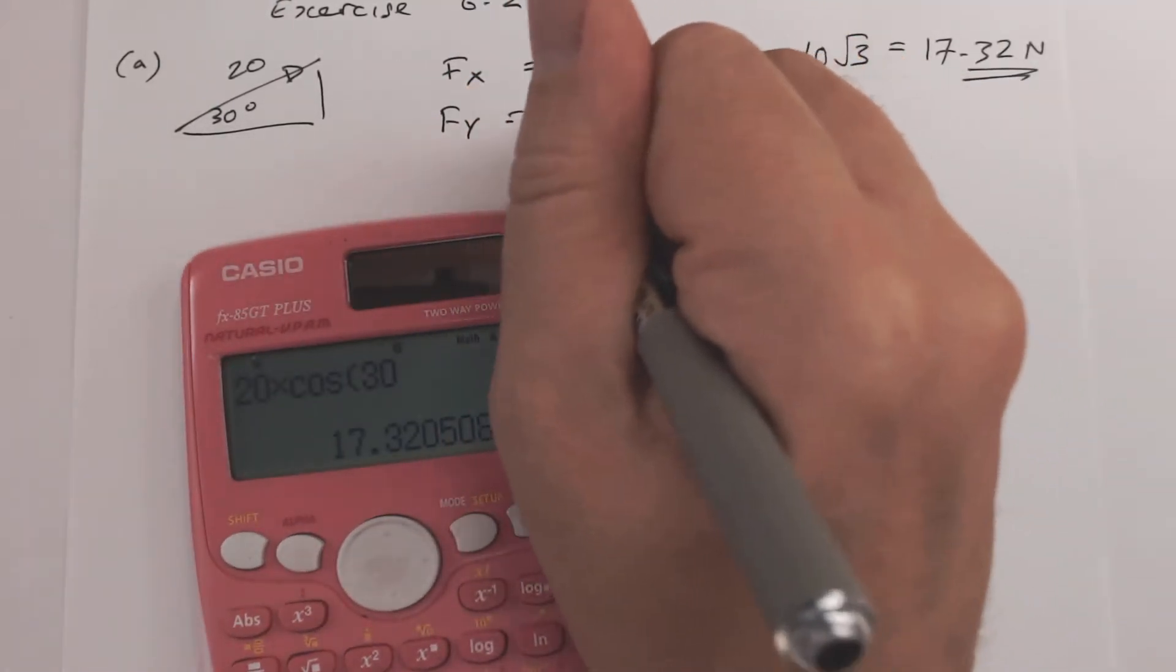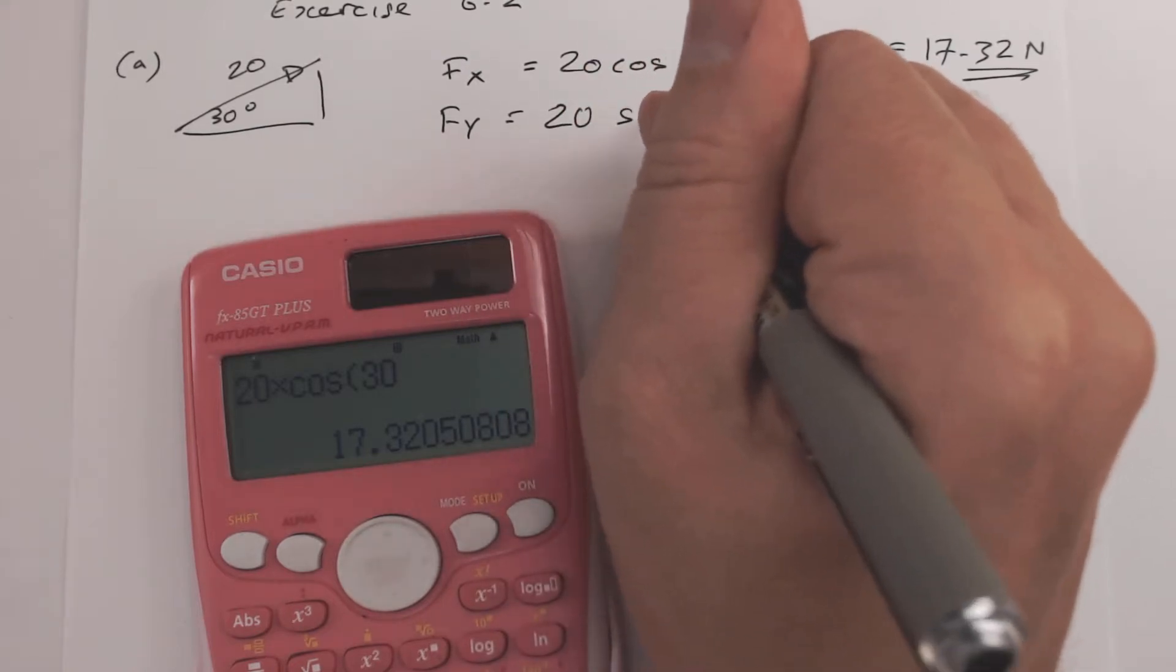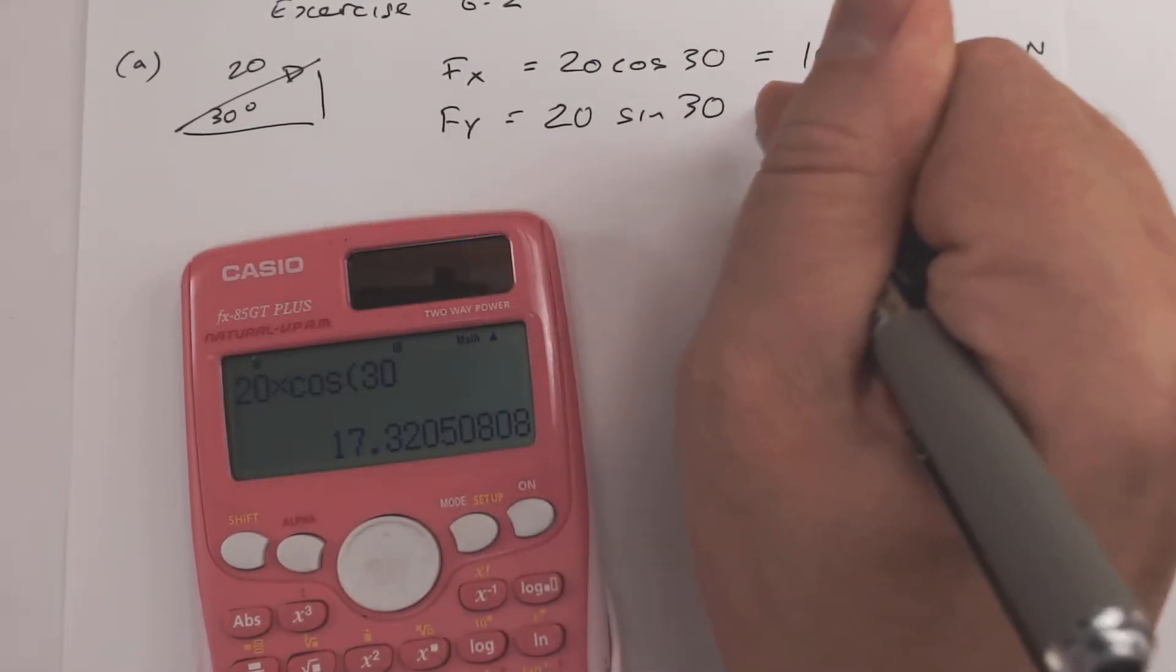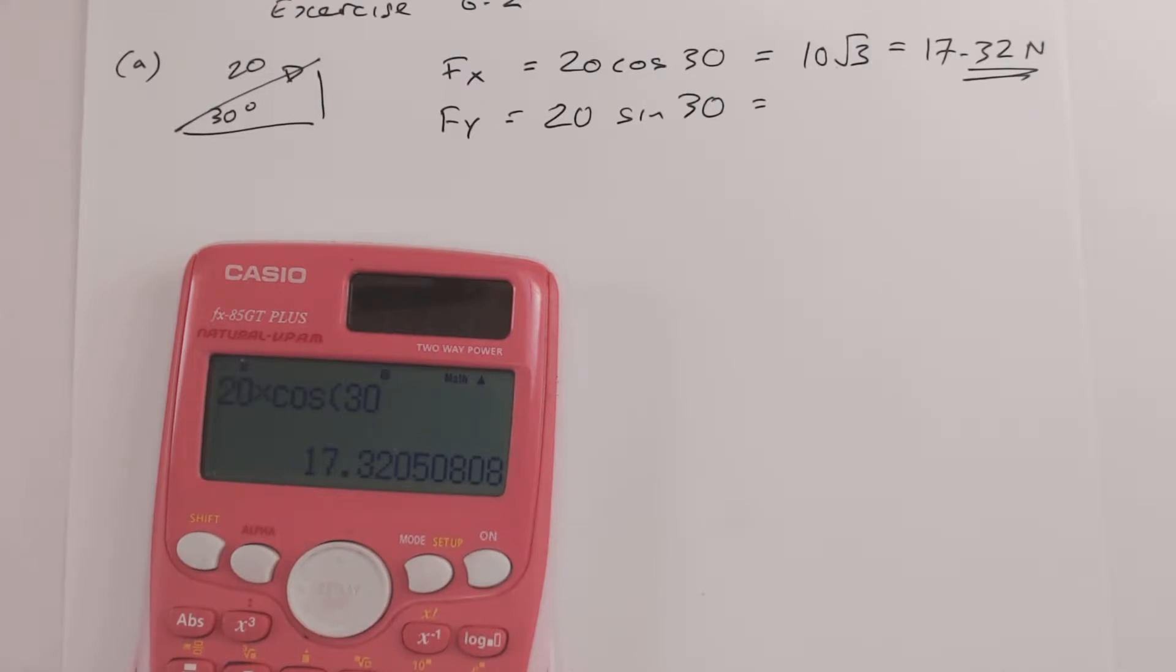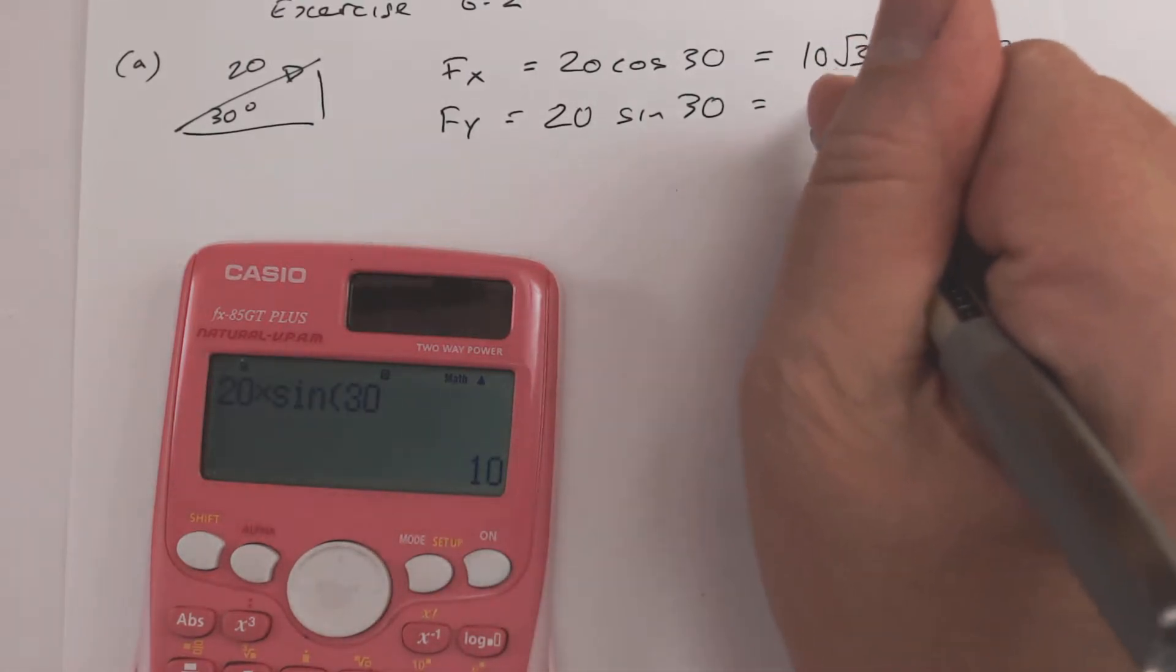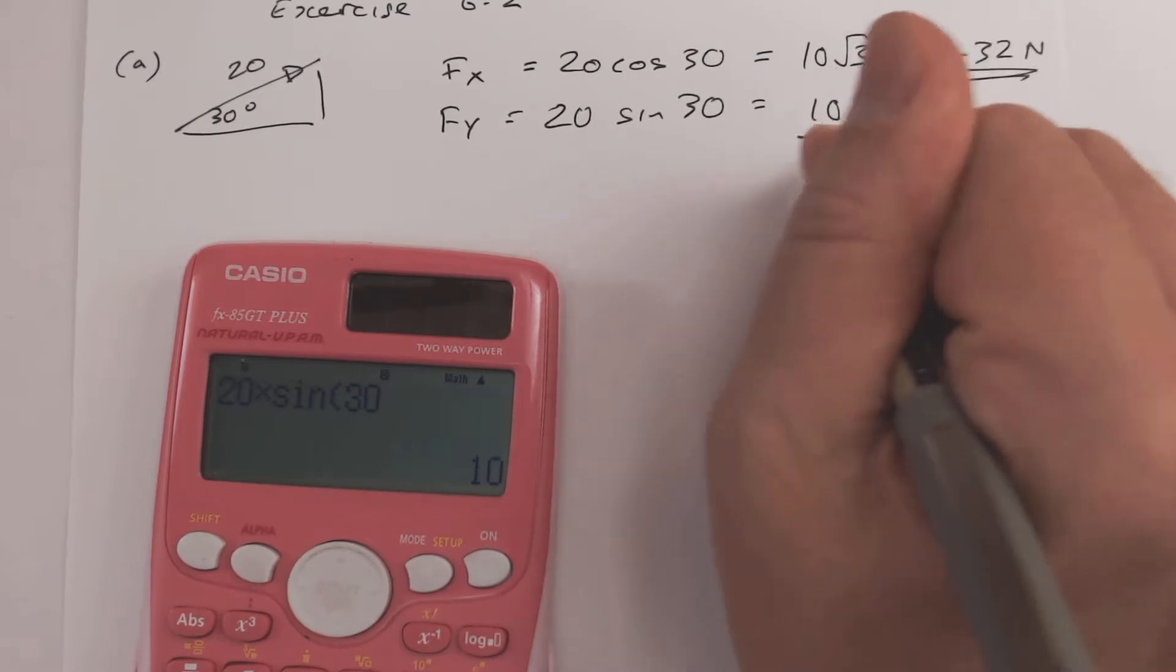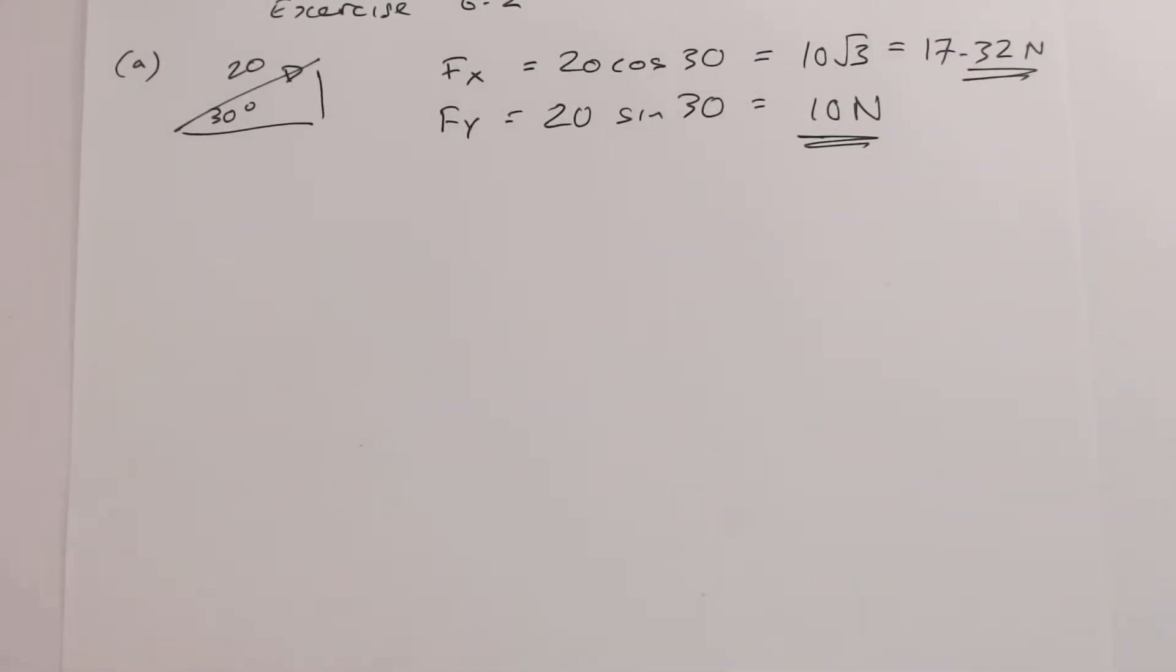Fy is going to be 20 sine 30, or I could have done cos 60. Let's go back, delete that and insert a sine instead, and we get the answer 10 newtons. Part b.